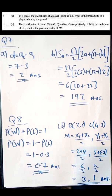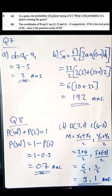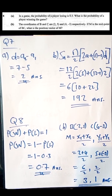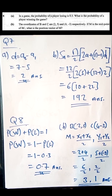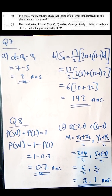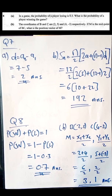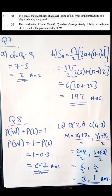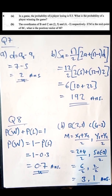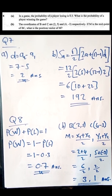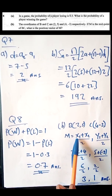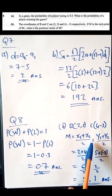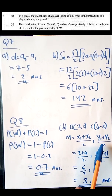Part B falls under coordinate geometry. The coordinates of B and C are (2, 5) and (4, 3) respectively. If M is the midpoint of BC, what is the position vector of M? To find the midpoint, we use the formula: ((x1 + x2)/2, (y1 + y2)/2).